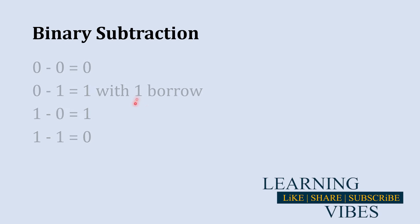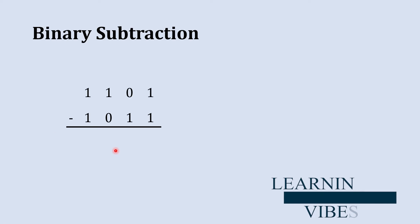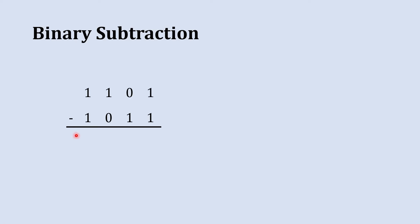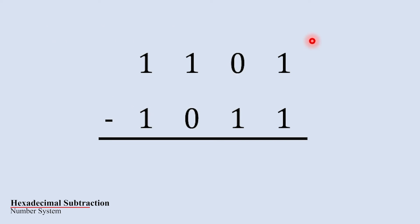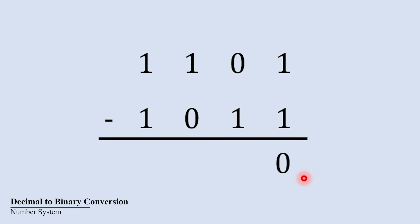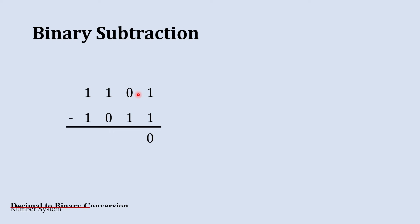Now let's jump to the next example. We are going to subtract these two binary numbers. We begin the subtraction with the rightmost column and then move towards the left. In the rightmost column we subtract one from one, and the answer is zero.